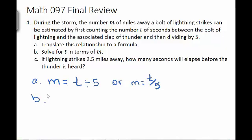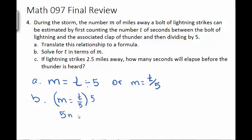For part b, we want to solve this for t in terms of m, so we want to get t by itself. The first thing we do is clear the fractions and decimals, so here I'm going to multiply everything by 5. On the left I get 5m, and on the right I get t. So now I have t equals something involving m — we've solved it for t.